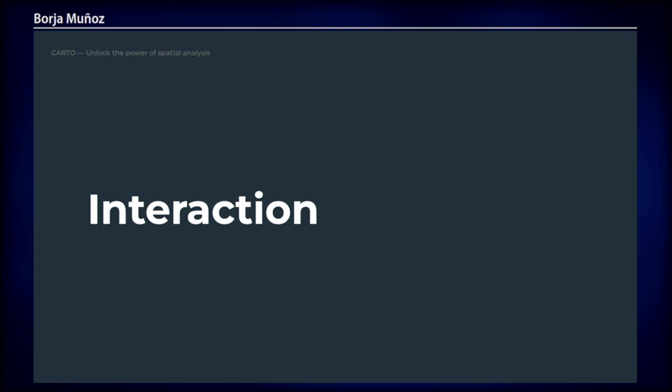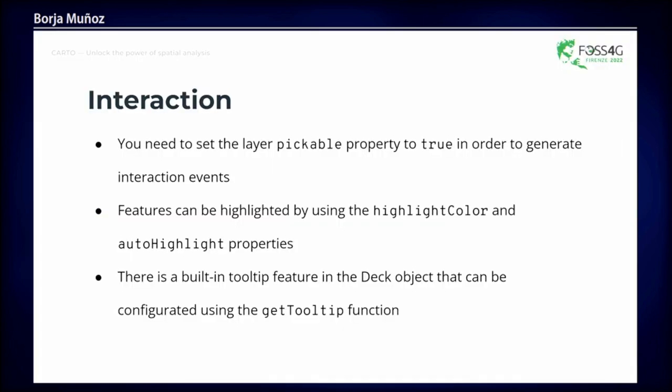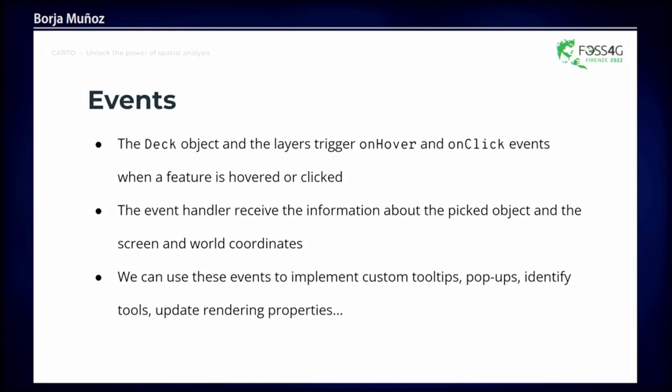Another important aspect is interaction — how users interact with visualized data. To make a layer interactive, set the pickable property to true to generate interaction events. Highlighting is easy client-side using the highlight_color and auto_highlight properties. DeckGL also includes a built-in tooltip. The two main interaction events are hover and click, and you can define custom event handlers for things like custom tooltips, pop-ups, or updating rendering properties when a feature is selected.